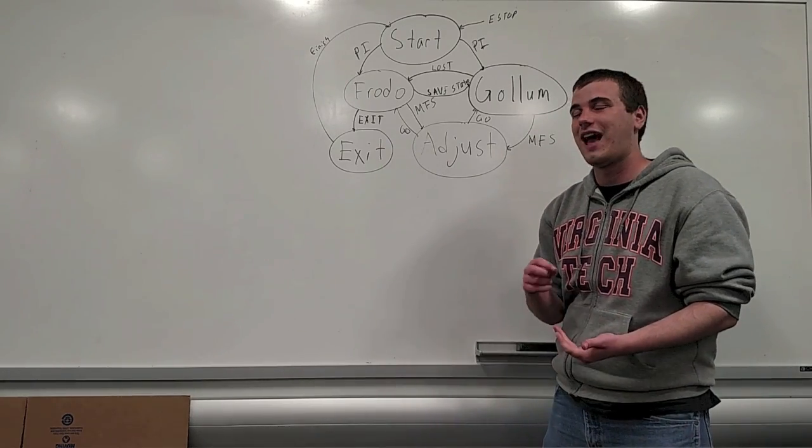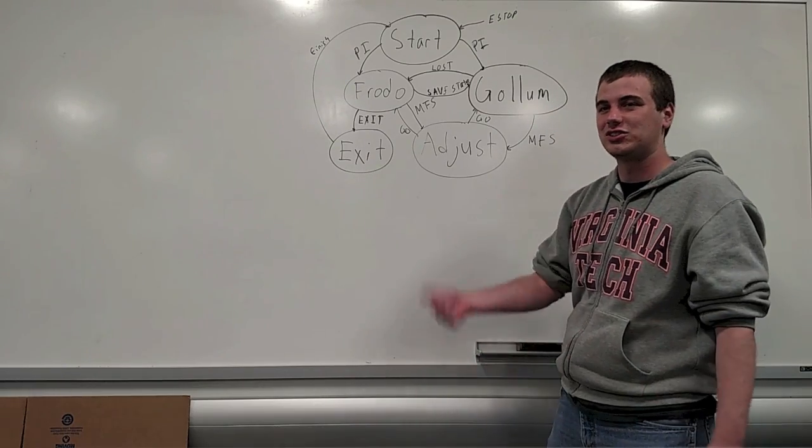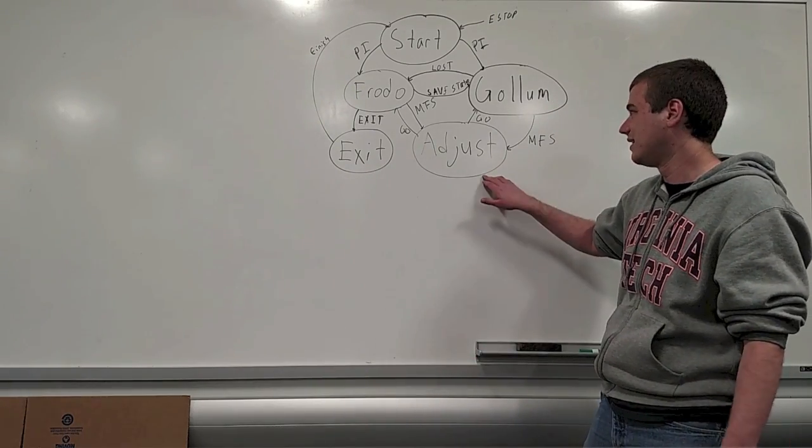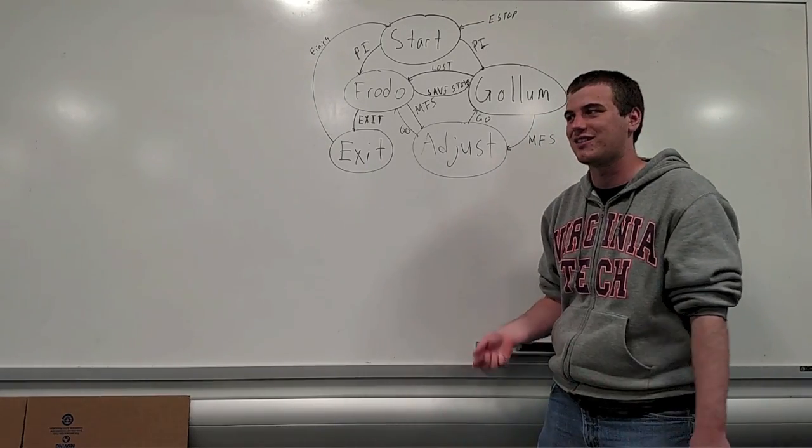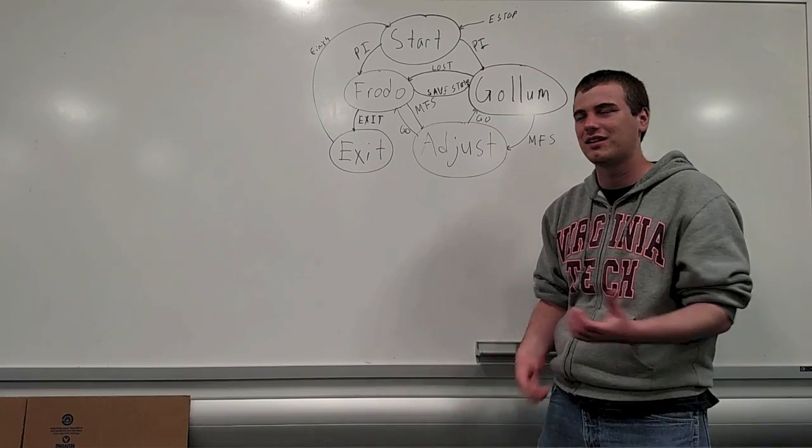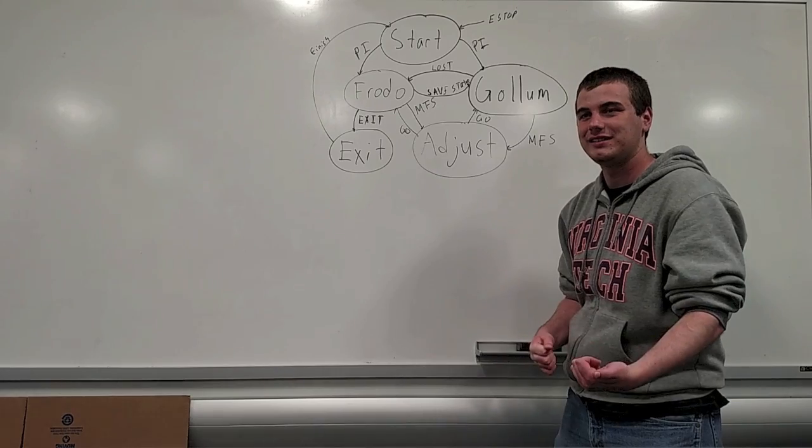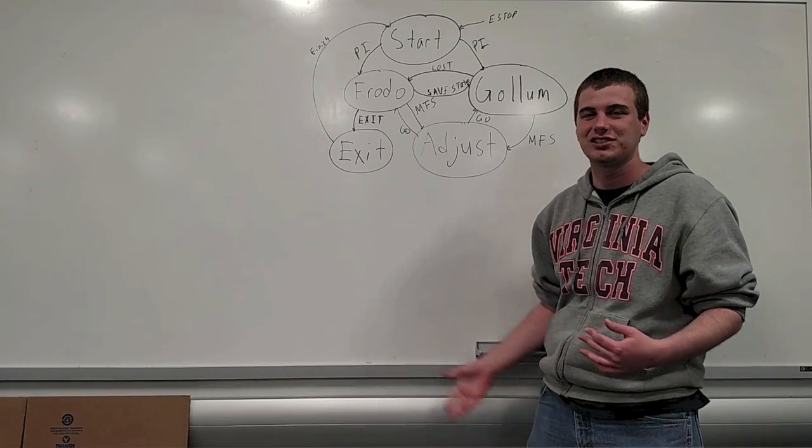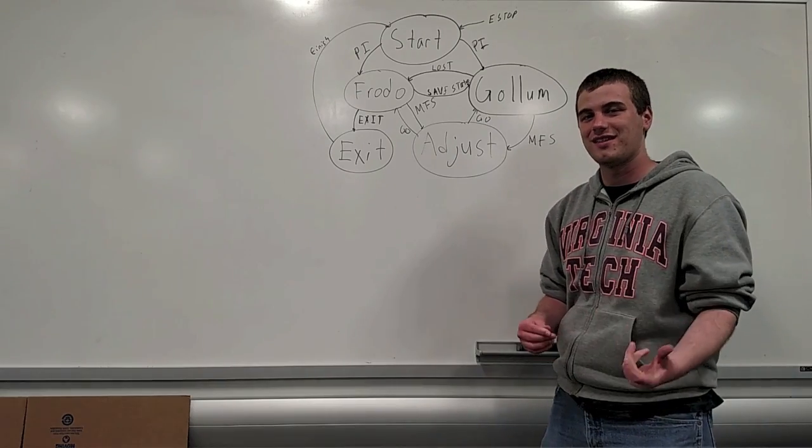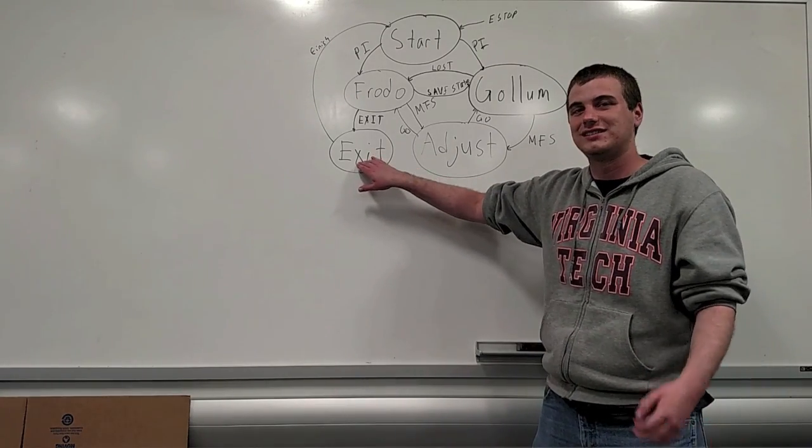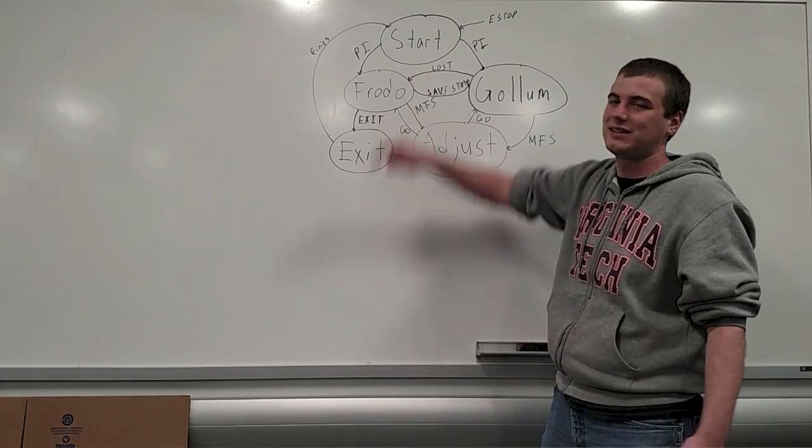Also, after every time the motors are finished processing, the control state will change the state to the adjust state. Then the user can adjust the rover within the maze to make sure that it's perfectly centered in the block. Then they'll hit Go. Then it'll return to the proper state. If it's at the exit, that's actually part of the list of instructions from the Raspberry Pi. So if it sees that it's at the exit from the Raspberry Pi, then it'll enter the exit state. After it's finished with exiting the maze, it'll reset itself back to the start state.